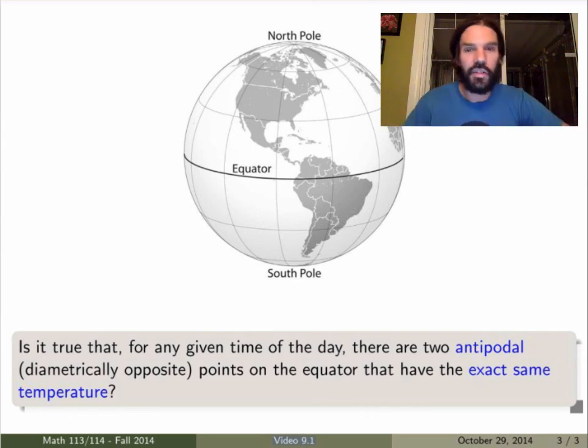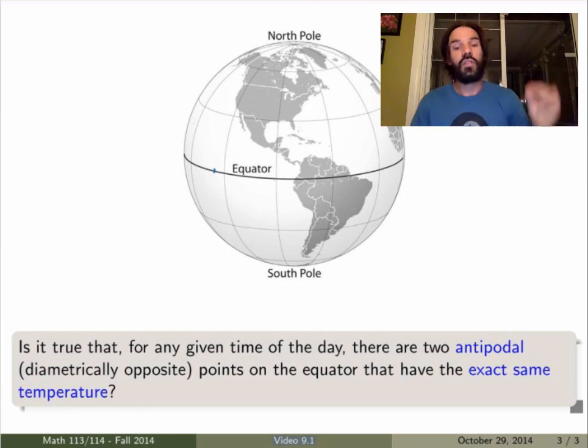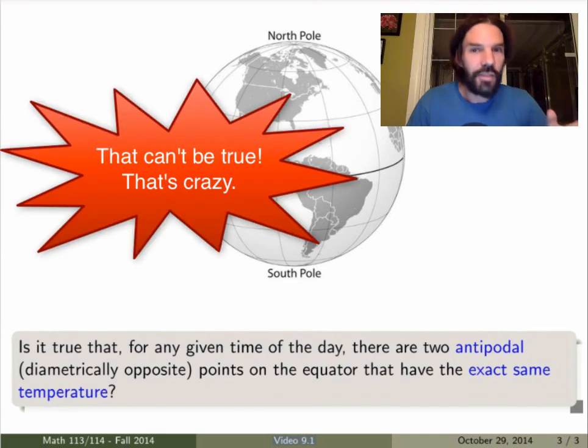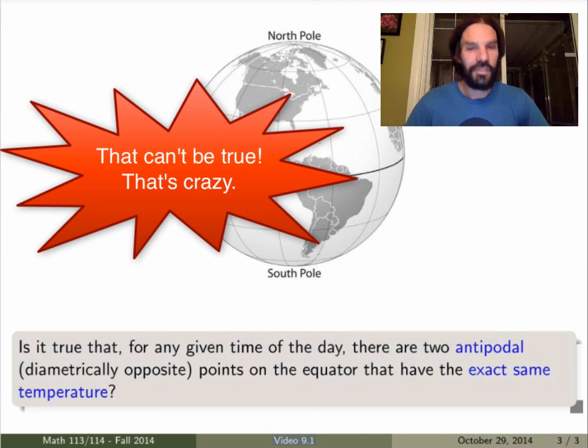Now, is it true that for any given time of the day, for any day of the year, there are two diametrically opposite points, a point here, say, and that one on the other side of the Earth, which are such that they have the exact same temperature? That sounds totally crazy, right? I'm telling you that at any given time of the day, you can find two points on both sides of the Earth that have the exact same temperature. Well, think about it. We'll come back to that in class. Thanks, guys.